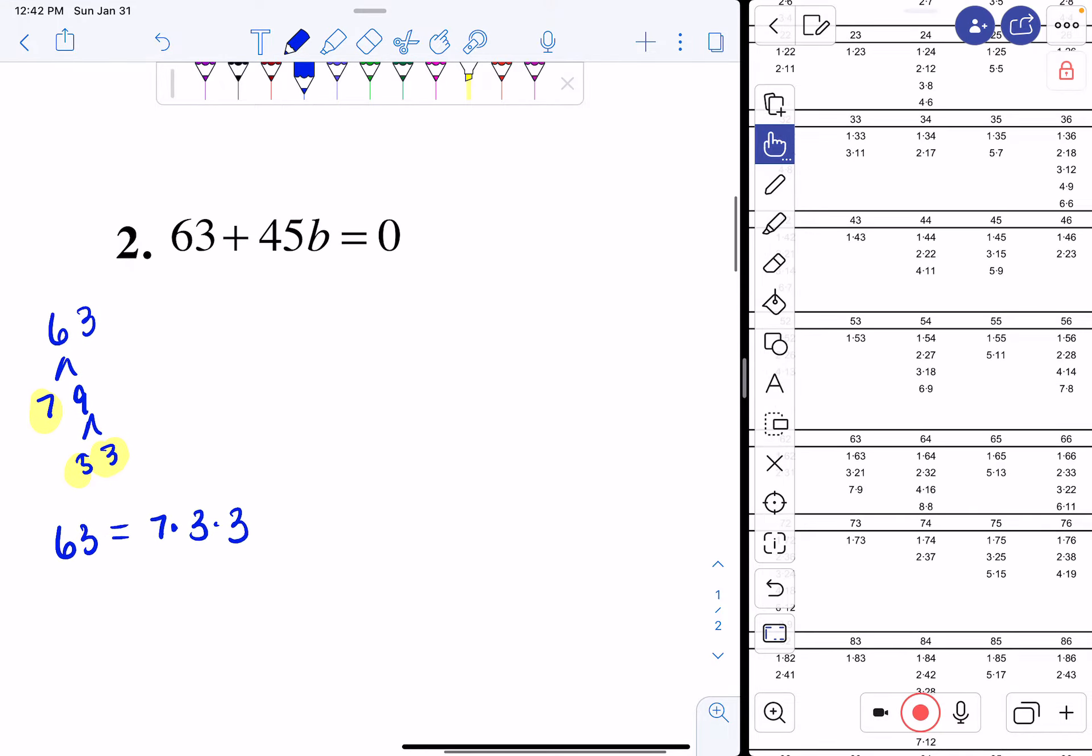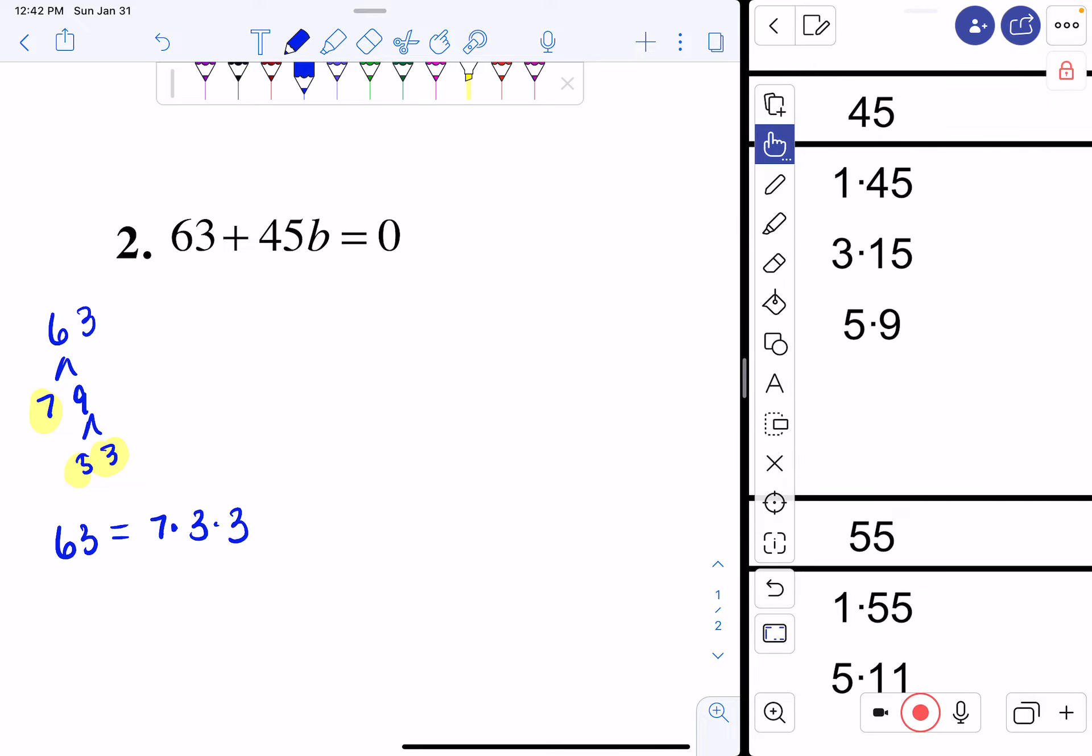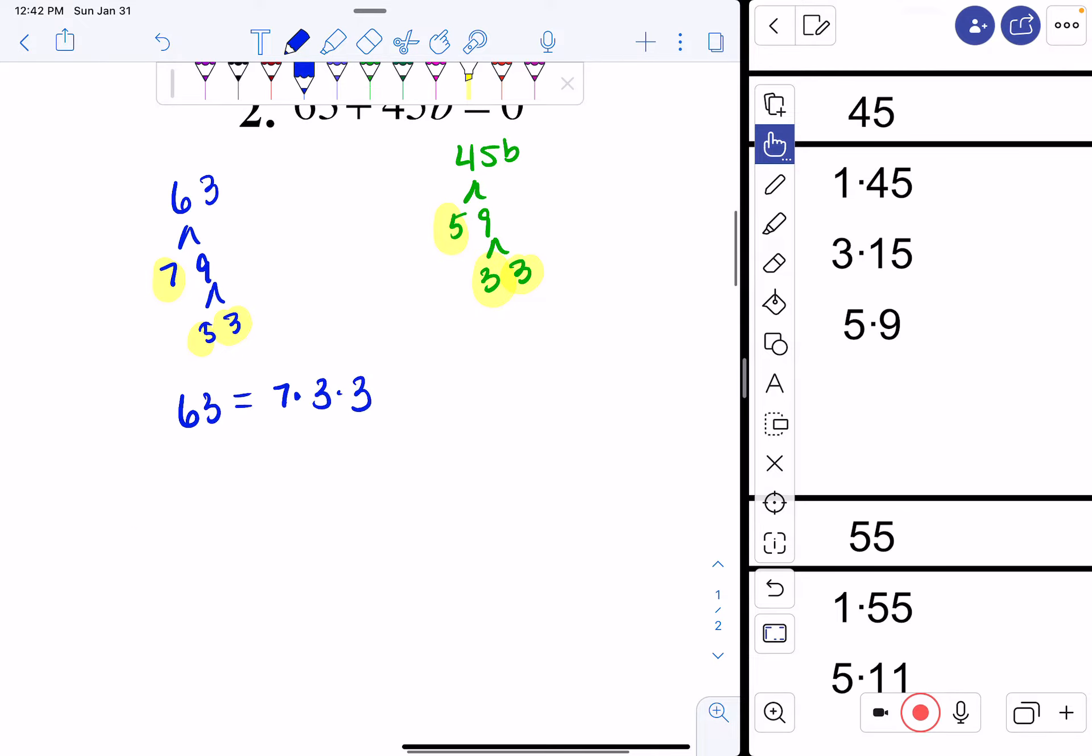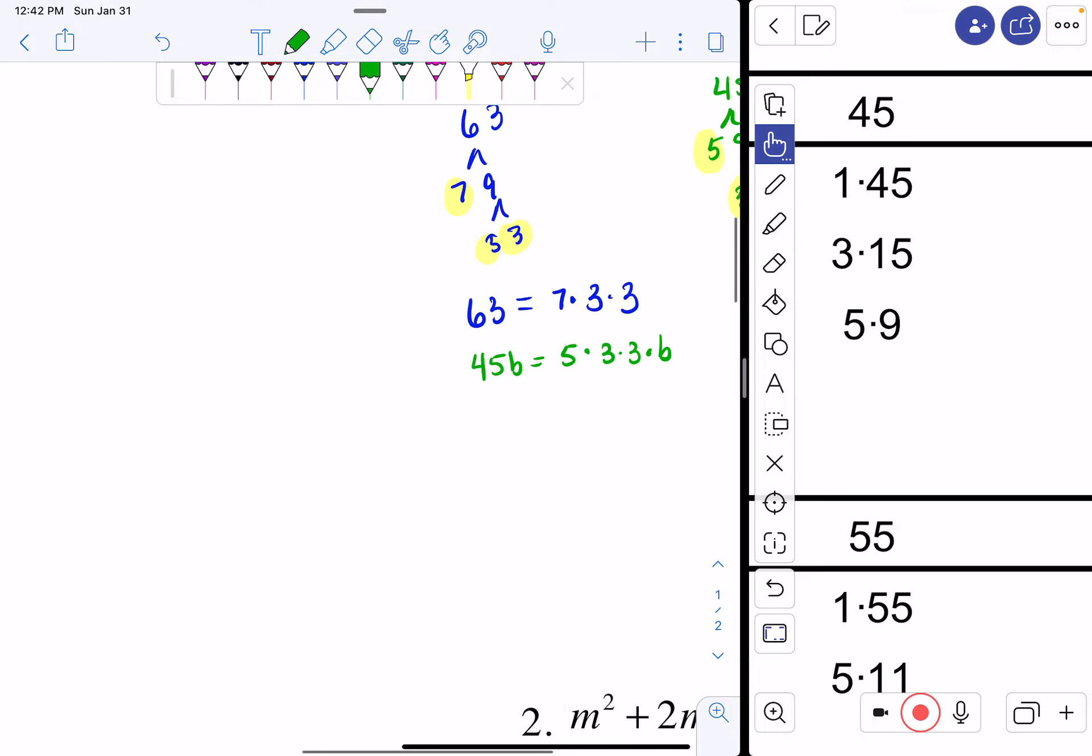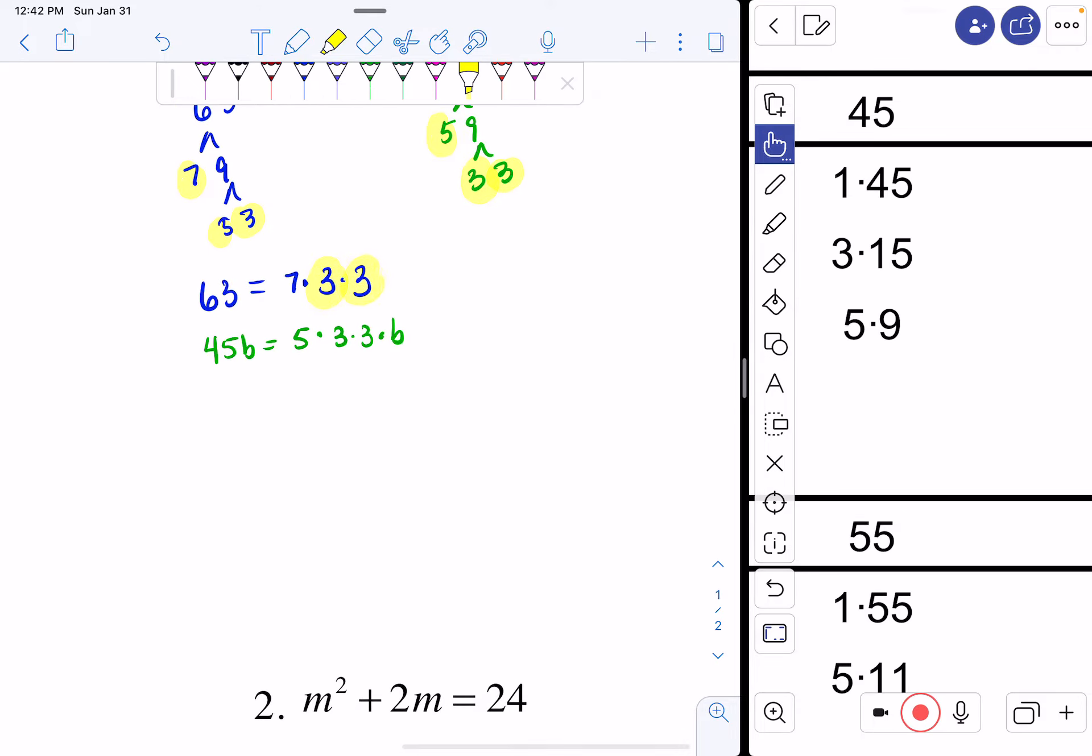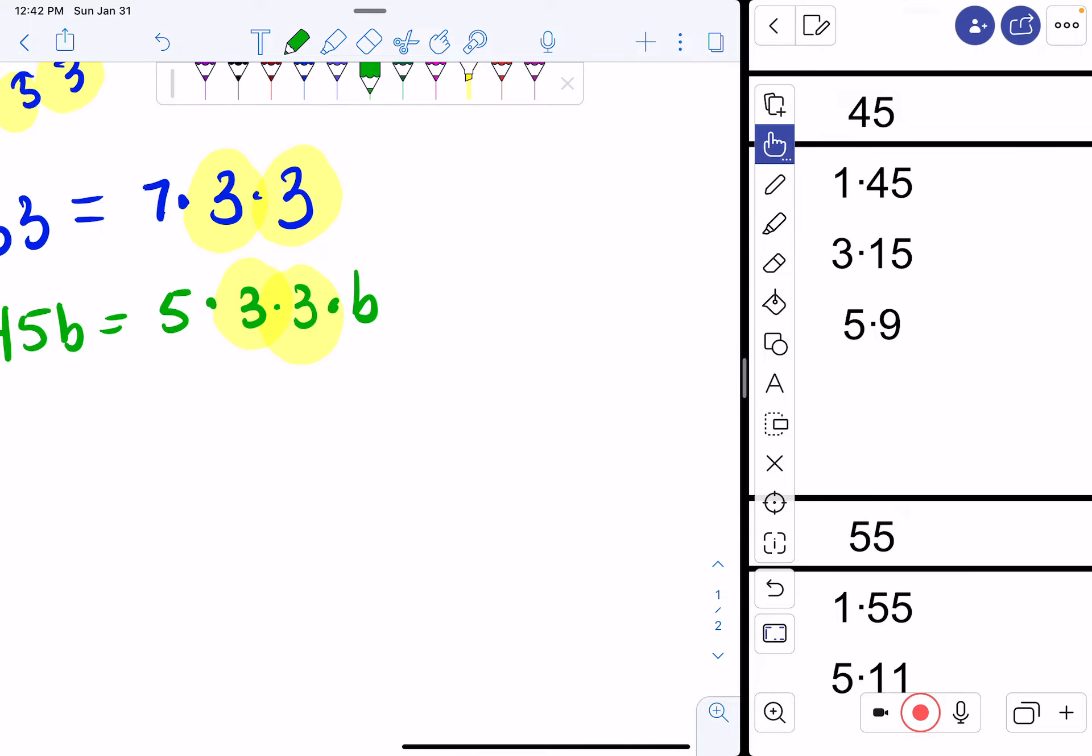Now I have to break apart my 45. 45, I can do 3 and 15, or 5 and 9. I'm going to do 5 and 9. Highlight my 5, break apart the 9 to be 3 and 3. So I can say 45b is equal to 5 times 3 times 3 times b. Now I highlight what's in common. I have a 3 and a 3, so my GCF is 9.